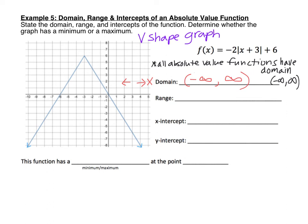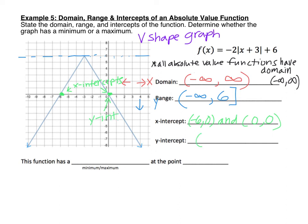For the range, we need to look at the y values. The lowest y goes down forever, so negative infinity is my lowest y value. But it doesn't go up forever — there's a high point, and the highest y value it ever touches is 6. So we go from negative infinity to 6, with a bracket on 6 since it touches that point. For the x-intercept, there are two places it crosses the x-axis: one at (negative 6, 0) and the other at (0, 0). For the y-intercept, it crosses the y-axis at (0, 0) as well.